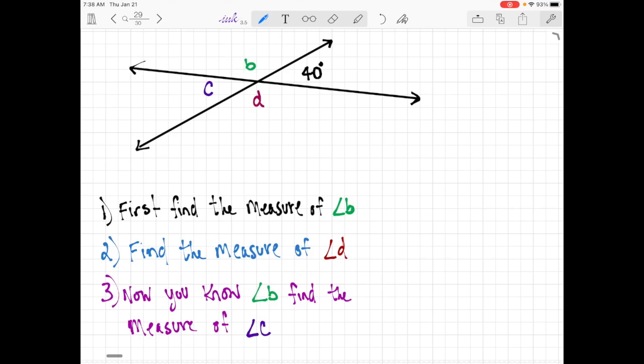So, well, I know that this is a straight line, so that is a linear pair. So I can say 40 degrees plus angle B is going to equal 180 degrees. Subtract 40 on both sides. We get angle B is equal to 140 degrees. So put that in here, 140 degrees.